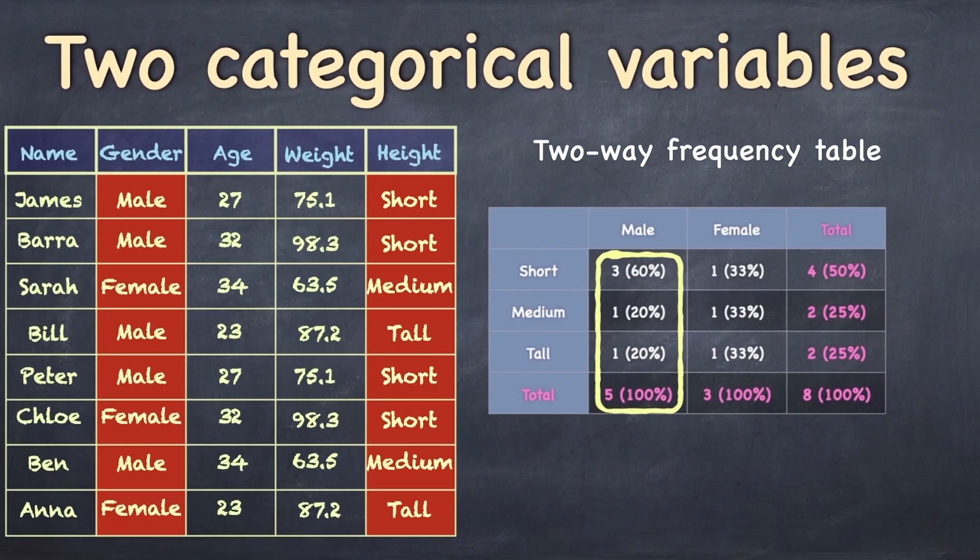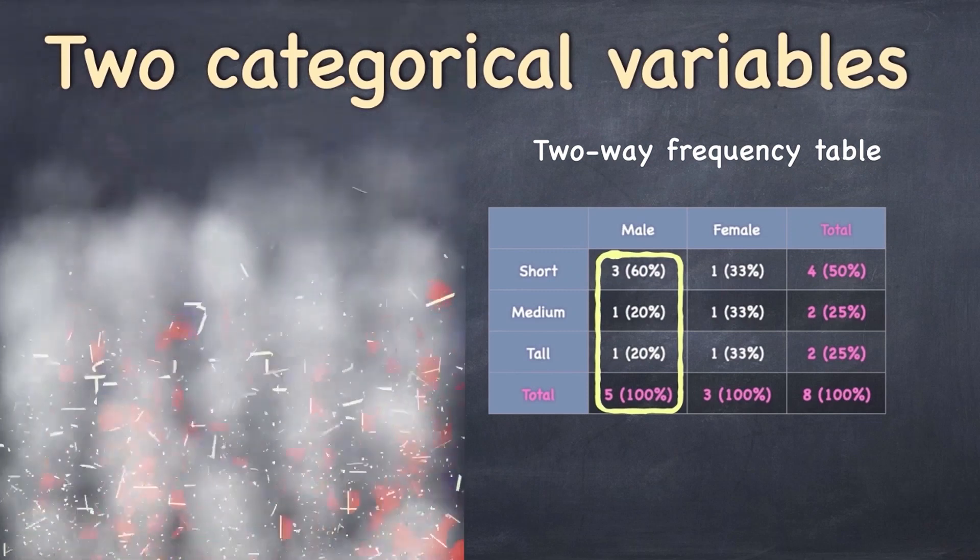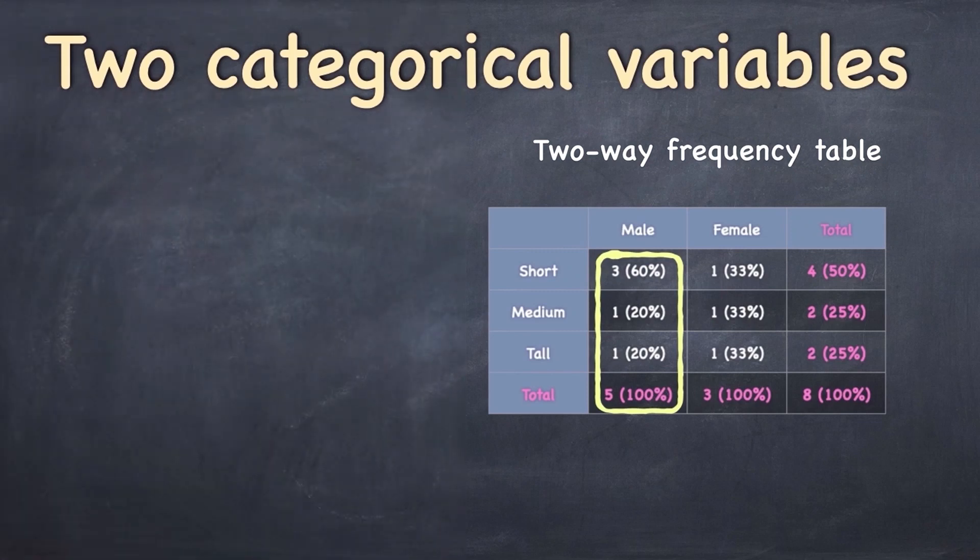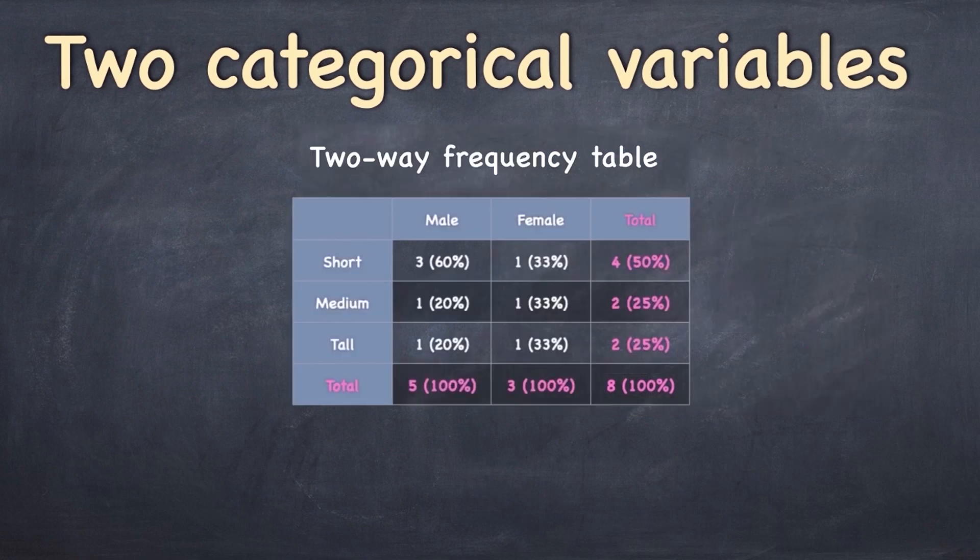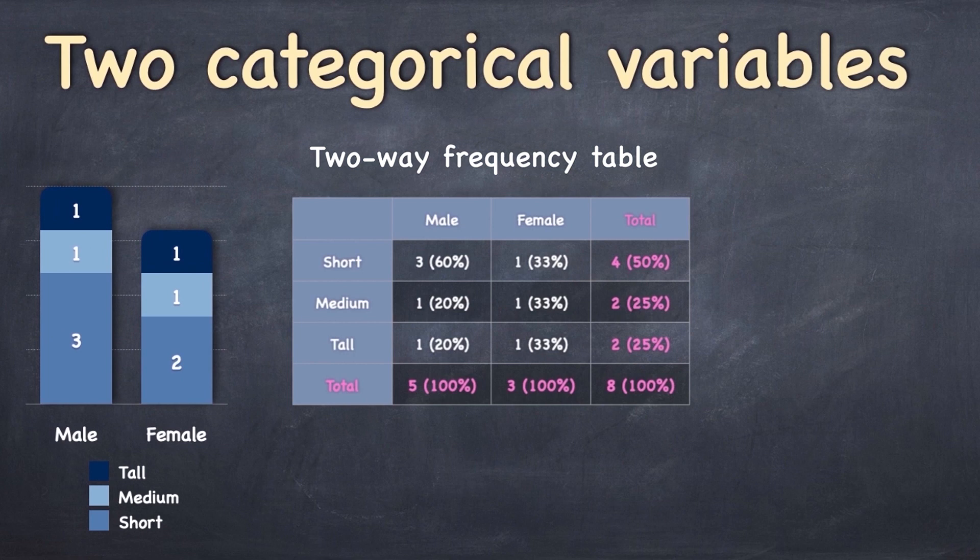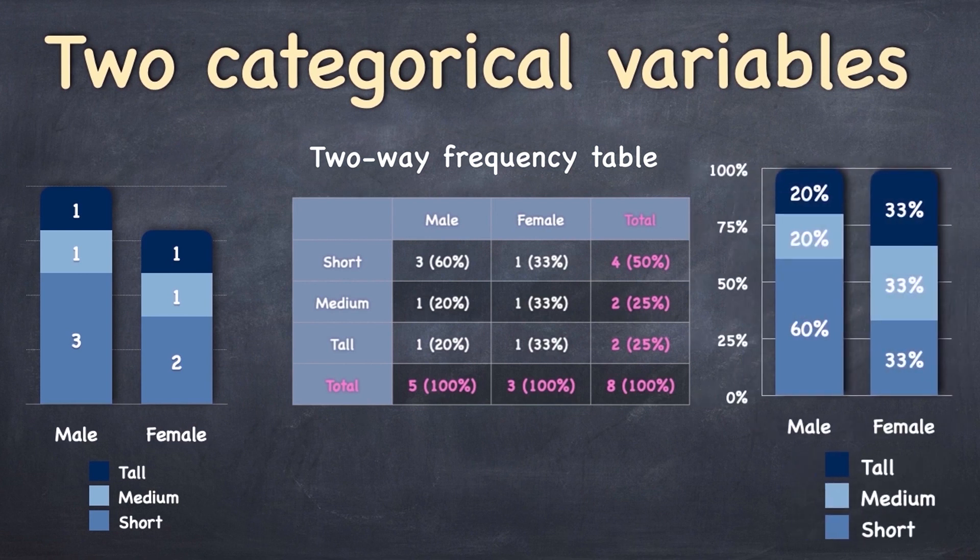So for example, in the male column, three men are short. That's three out of a total of five men altogether. So 60% of the men are short. And so on. Now, I'm going to show you two ways that you can visualize this data. So firstly, you can have a stacked bar chart where the height of each column is determined by the actual number of observations, or you can stack them by percentage so that each column towers up to 100%, making it much easier to visually compare proportions.